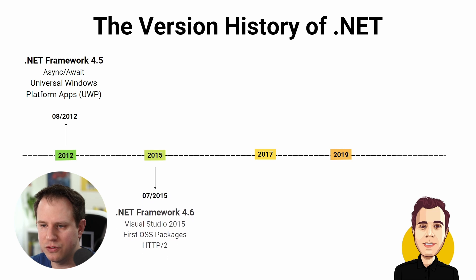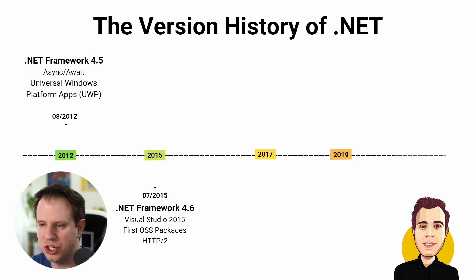The .NET Framework 4.6 was released on July 20th, 2015, together with Visual Studio 2015. It added the just-in-time (JIT) compiler called RyuJIT, as well as the first open-source .NET Framework packages. Besides Visual Studio 2015, the most notable addition was HTTP/2 support.